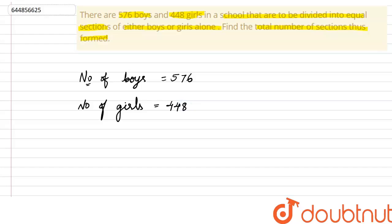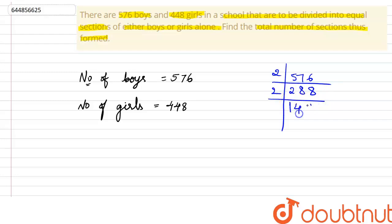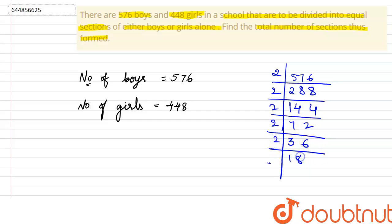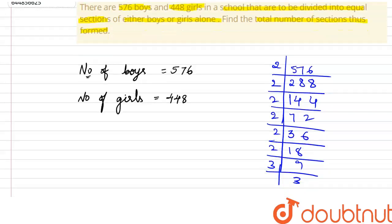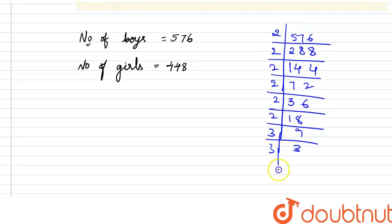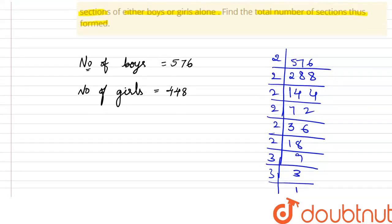Let us find the prime factors of these two numbers. For 576: dividing by 2 repeatedly — 576 ÷ 2 = 288, ÷ 2 = 144, ÷ 2 = 72, ÷ 2 = 36, ÷ 2 = 18, ÷ 2 = 9, then 9 = 3 × 3. So the prime factorization process is complete.